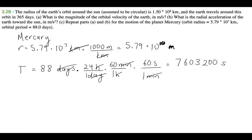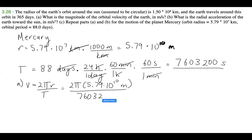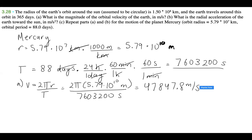Now for Mercury part A: orbital speed is 2πr over the period, which is 2π times 5.79 times 10 to the 10 meters, over 7,603,200 seconds. When I do that, I get 47,847.8 meters per second. That's the orbital speed of Mercury around the Sun.